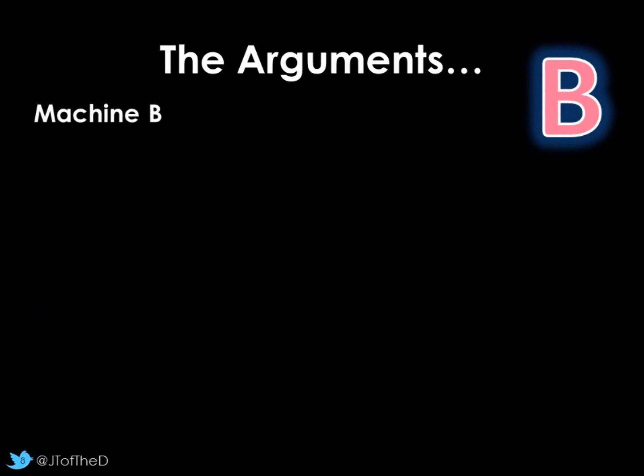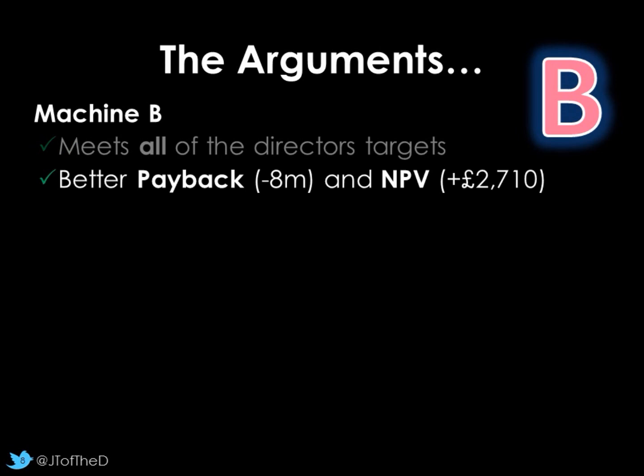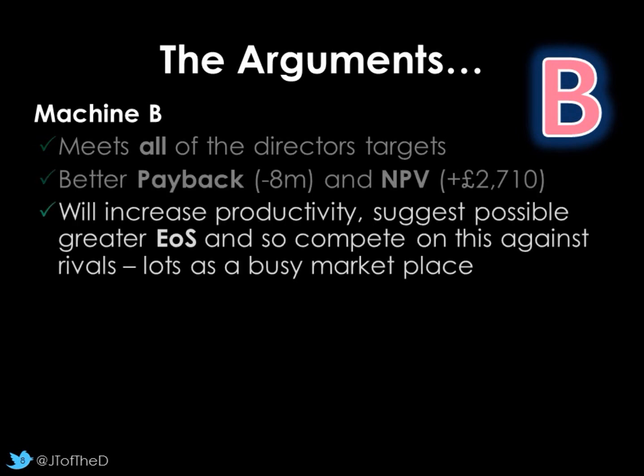What about machine B? It does meet all of the director's targets. Payback's under four years, the ARR is over 3%, and has a positive net present value. The payback is significantly quicker than machine A, eight months. Where cash has been an issue, certainly cash flow, that's probably quite significant. Net present value is positive and it's £2,710 better than machine A, which is negative anyway. Increased productivity, so possibly greater economies of scale. It could actually compete on that front. Think about Porter and some of the suggestions. That's quite important in terms of having a strategy.